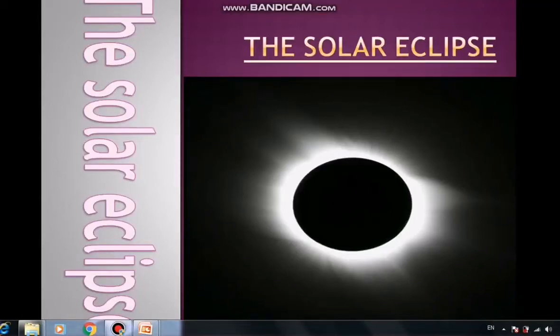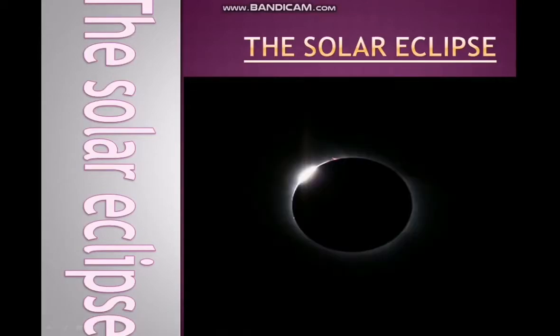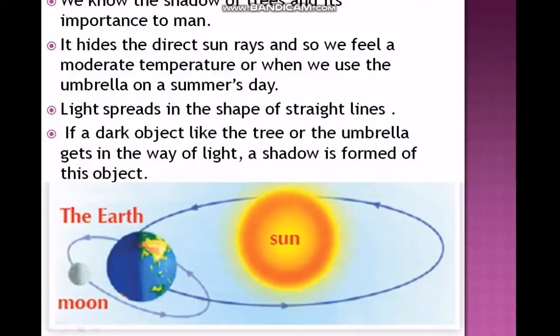Unit 3, Lesson 1: The Solar Eclipse. We know the shadow of trees and its importance to man. It hides the direct sun rays and so we feel a moderate temperature, or when we use the umbrella on a summer's day.